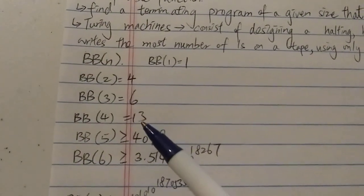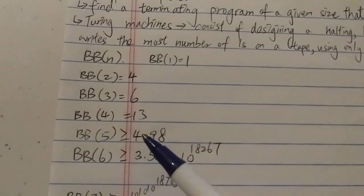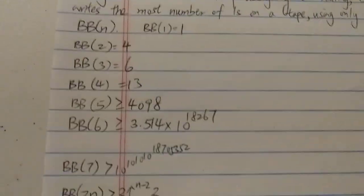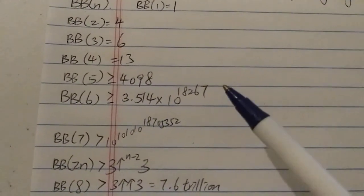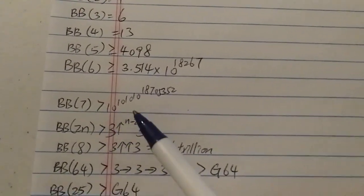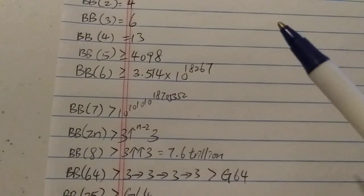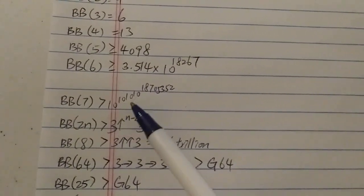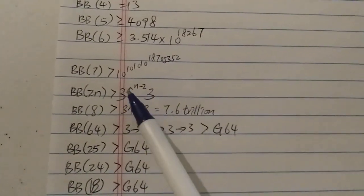For BB(5), it has been shown that the minimum result is 4098, but it's not proven yet. For BB(6), you start to get really big numbers - 3.514 times 10 to the 18267. For busy beaver for seven state, BB(7) would be greater than 10 to the 10 to the 10 to the 10 to this number.